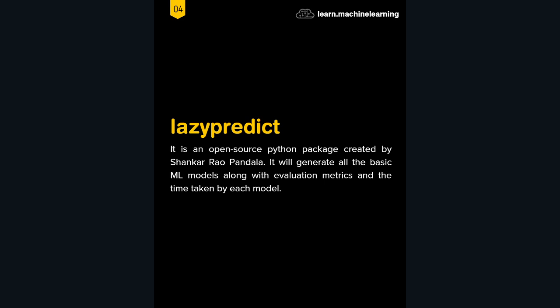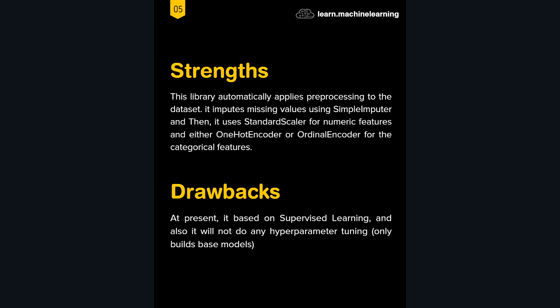LazyPredict generates all the basic machine learning models along with evaluation metrics and the time taken by each model. These are very important — knowing how long every algorithm takes and how well it performs helps you decide which top algorithms to focus on. A strength of this library is it automatically applies data preprocessing: it imputes missing values using SimpleImputer, feature-scales numeric features with StandardScaler, and handles categorical features with OneHotEncoder or OrdinalEncoder. If you want to use other preprocessing, you need to do that manually.